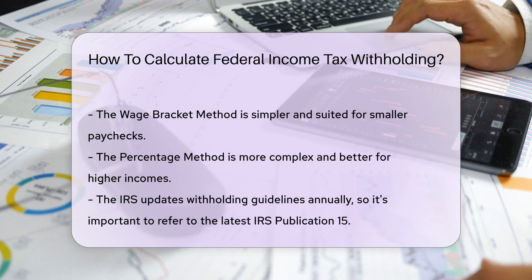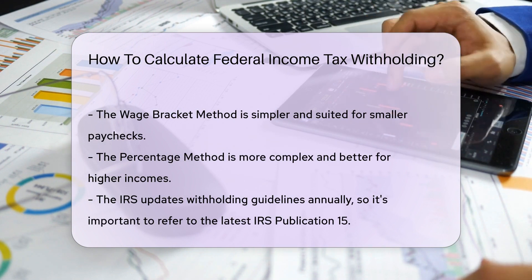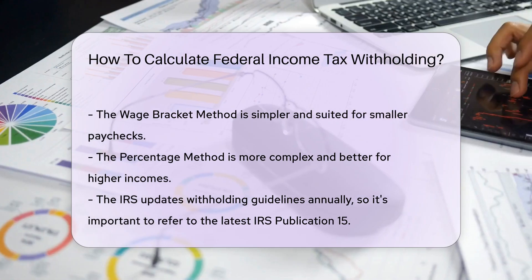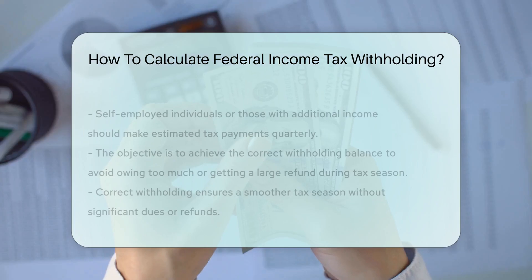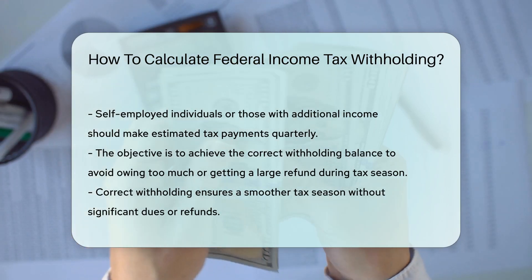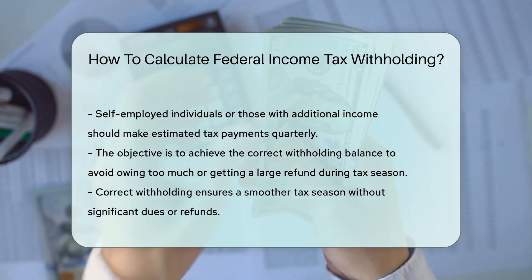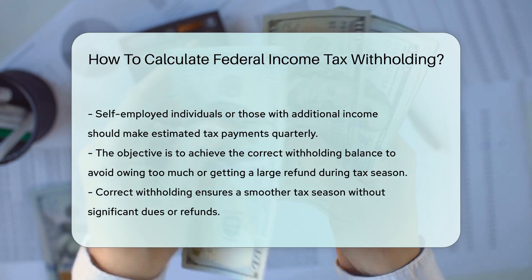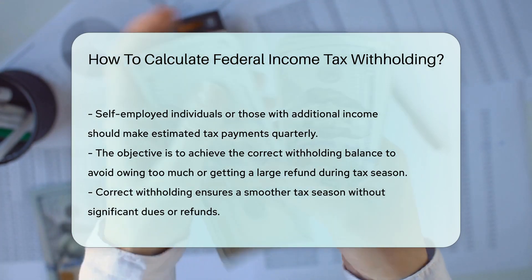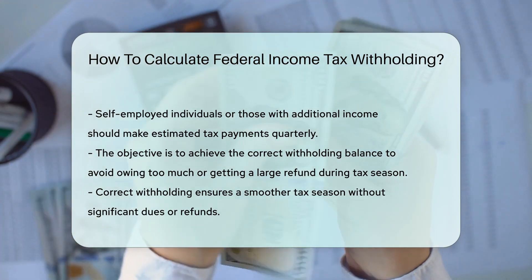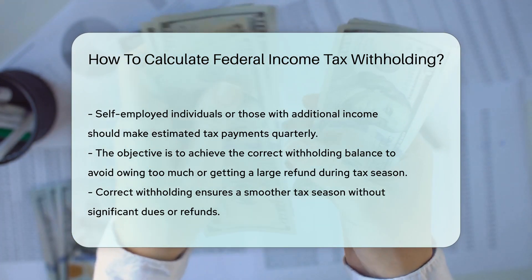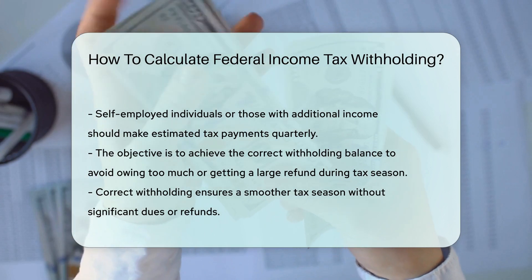The IRS updates withholding information yearly to keep the tax codes fresh and relevant, so always check the latest IRS Publication 15 for updates. For those self-employed or with additional income, estimated tax payments are the way to go — these are quarterly payments based on expected income and tax liability. Remember, the goal is to withhold the right amount: not too much, not too little.